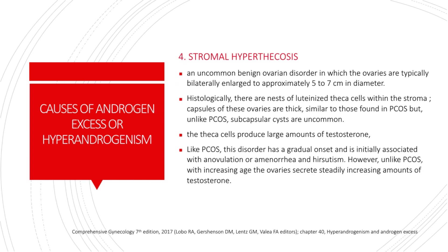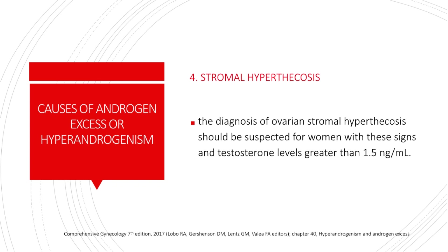Next is stromal hyperthecosis. This is an uncommon benign ovarian disorder in which the ovaries are typically bilaterally enlarged to approximately 5–7 cm in diameter. There are nests of luteinized theca cells within the stroma and the capsules of these ovaries are thick, similar to those found in PCOS, but unlike PCOS, subcapsular cysts are uncommon. The theca cells produce large amounts of testosterone and, like PCOS, this disorder has a gradual onset and is initially associated with anovulation or amenorrhea and hirsutism. However, unlike PCOS, with increasing age the ovaries secrete steadily increasing amounts of testosterone. The diagnosis of stromal hyperthecosis should be suspected in women with signs and testosterone levels greater than 1.5 nanograms per mL.